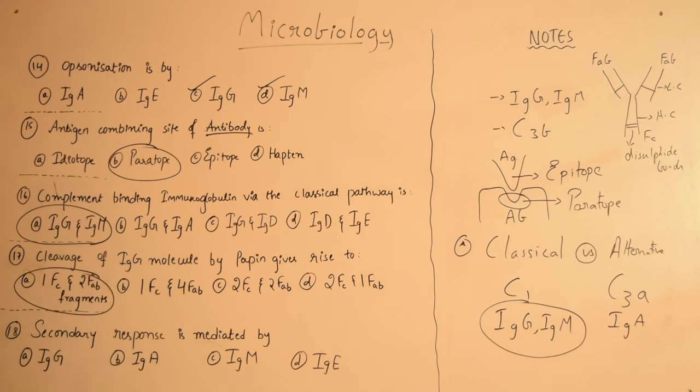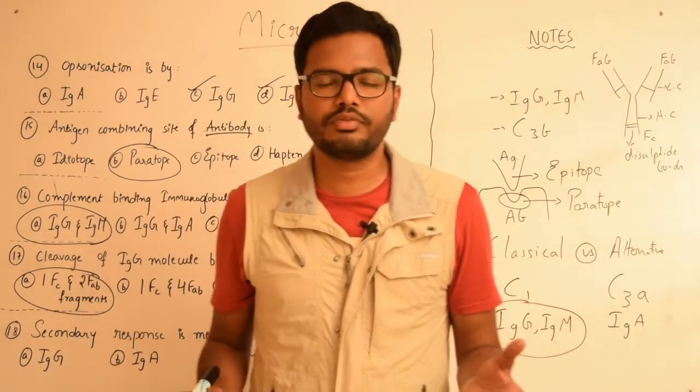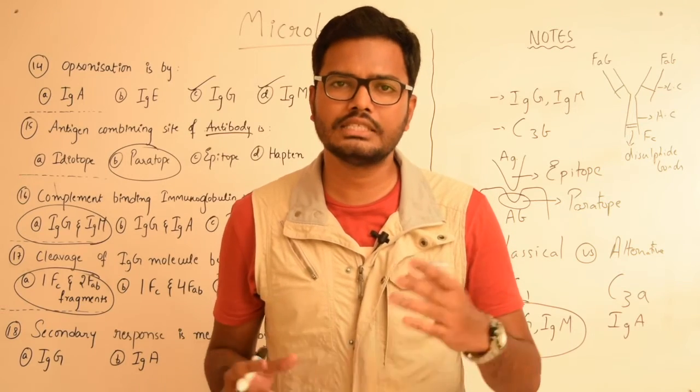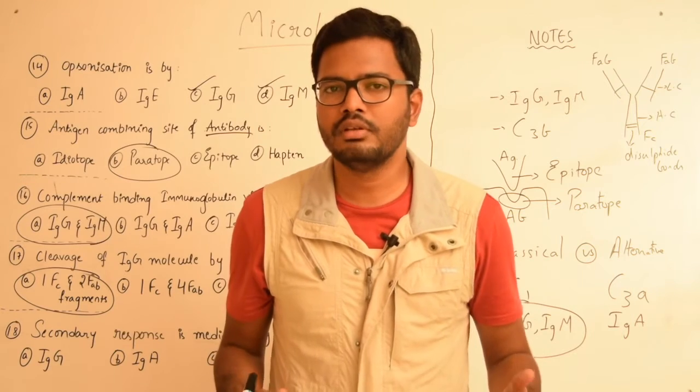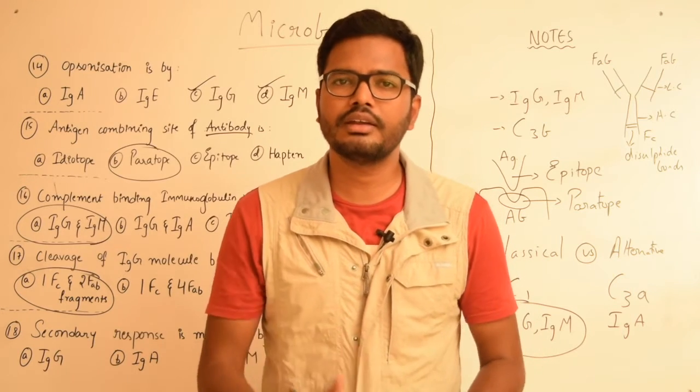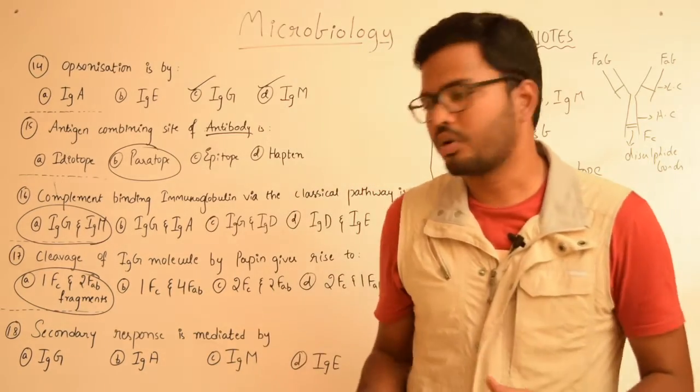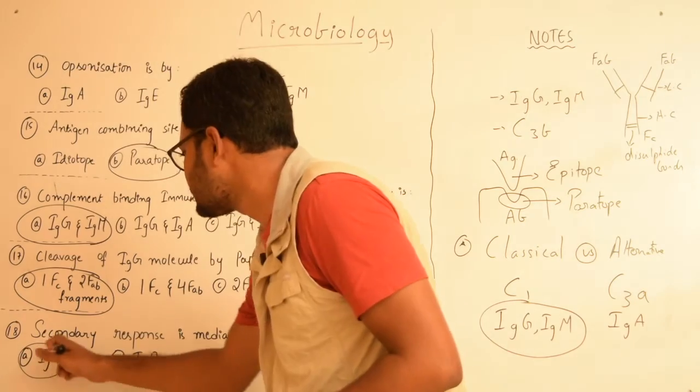Now moving on to the final question: secondary response is mediated by IgG, IgA, IgM, or IgE. As I have discussed in the previous videos, the first formed antibody or the oldest immunoglobulin is IgM and it is short lived because of its very low half-life.